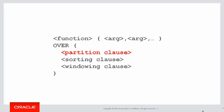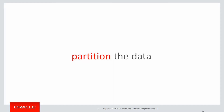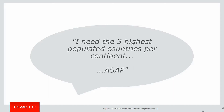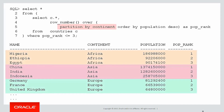A quick 10-second recap: in the last session, we looked at the partition clause for the first time and that was really about partitioning the data into logical subsets and then applying an analytic to them. We needed the three highest populated countries per continent. We partitioned the data by continent and got a ranking figure — one, two, or three — in the pop rank column for each continent rather than across the whole set.